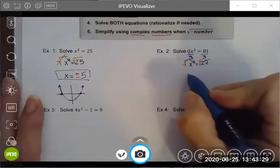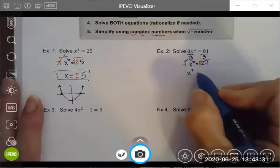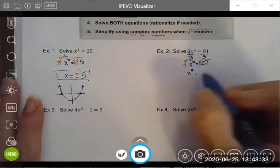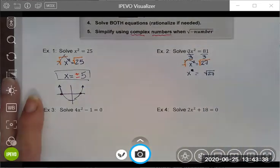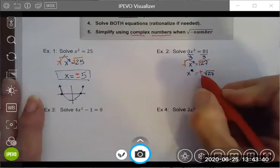These are inverse operations. They undo each other. I am left with the positive and the negative root of 27.